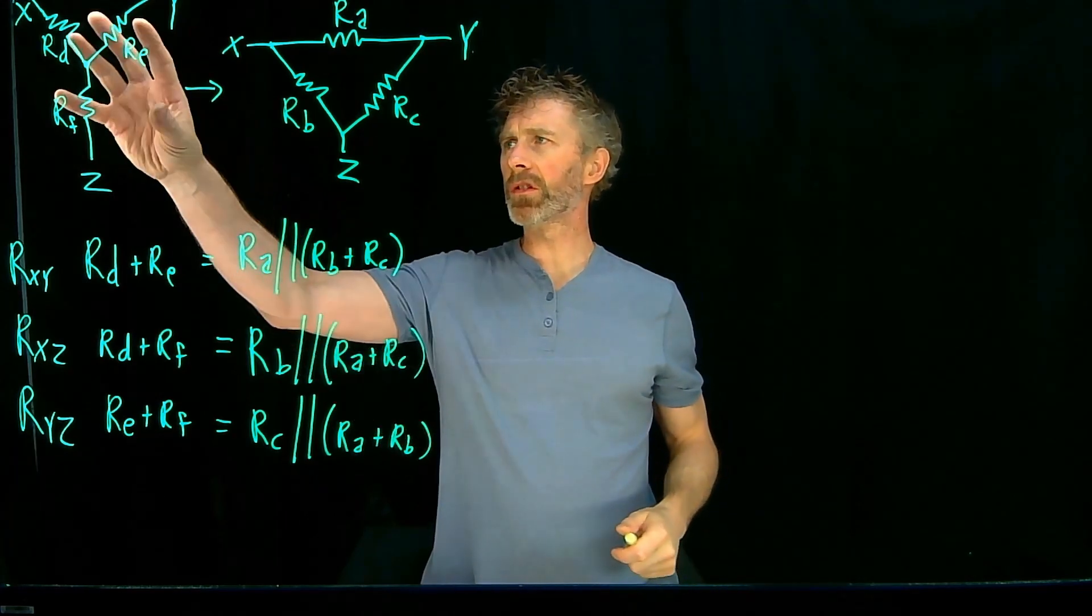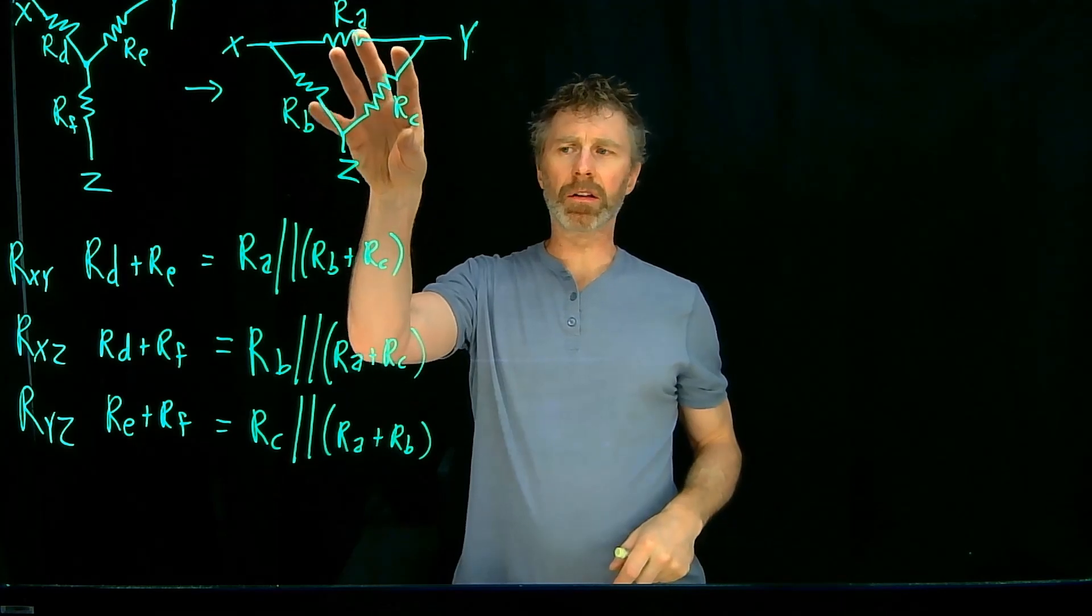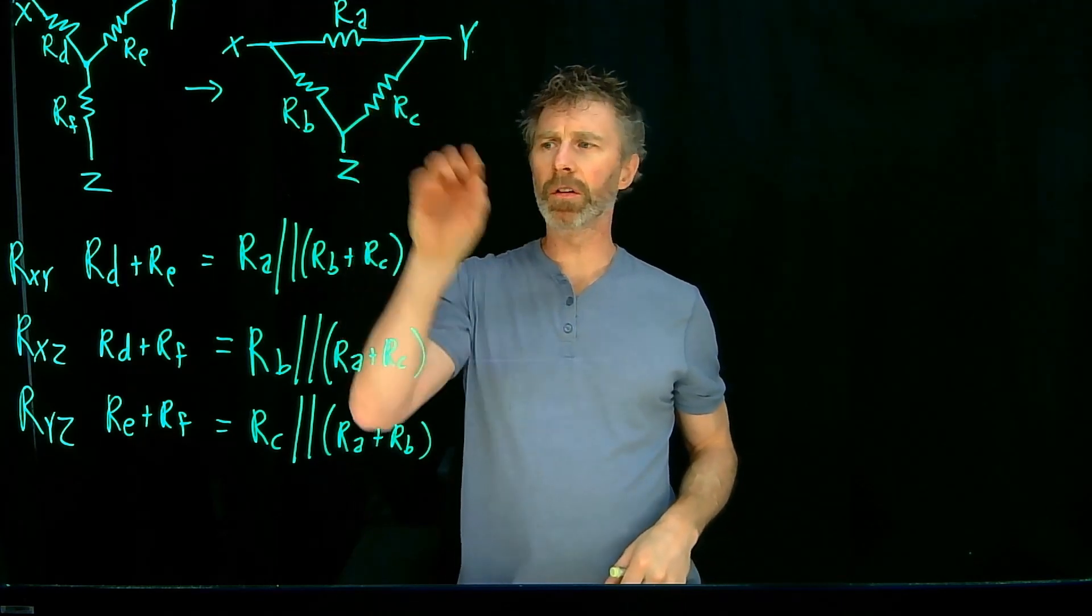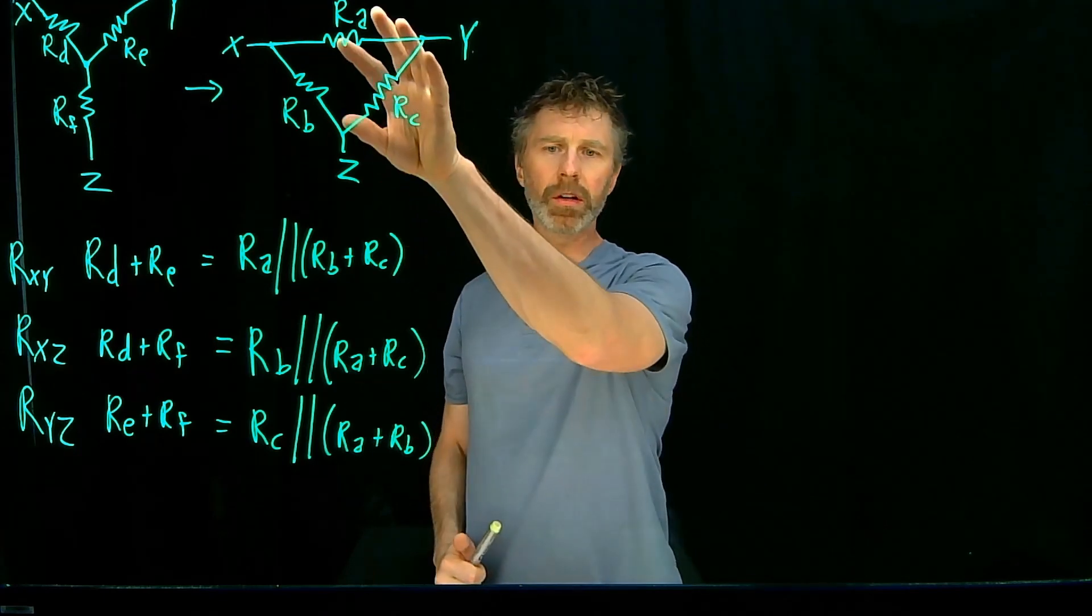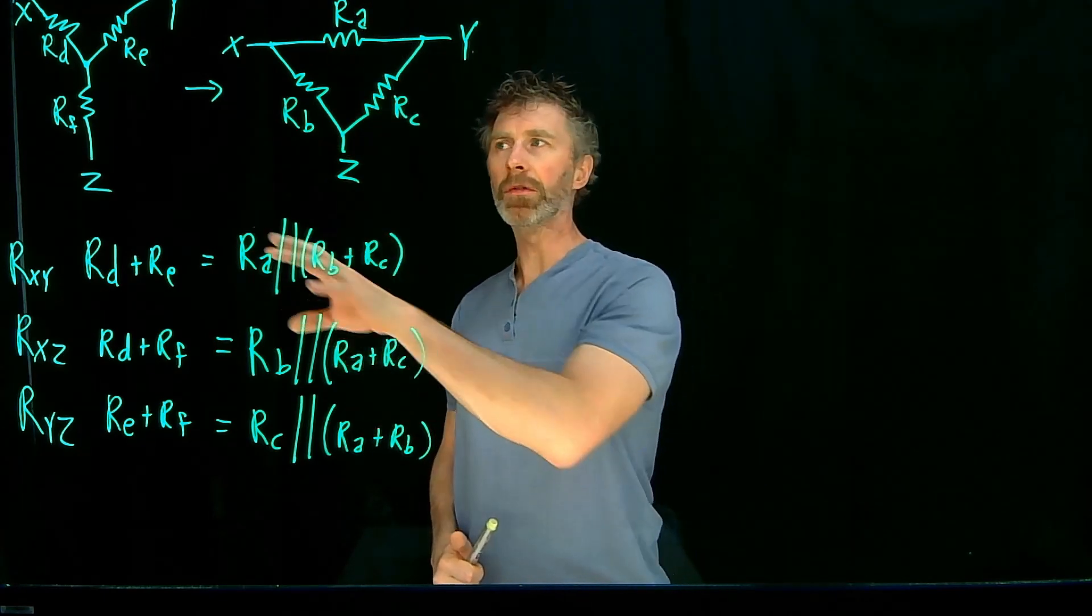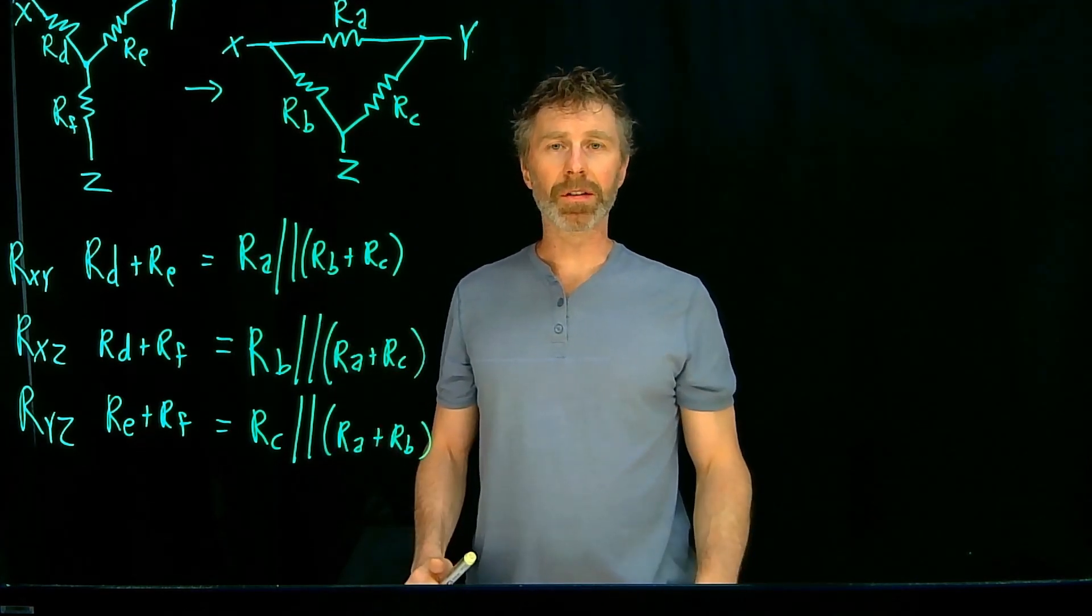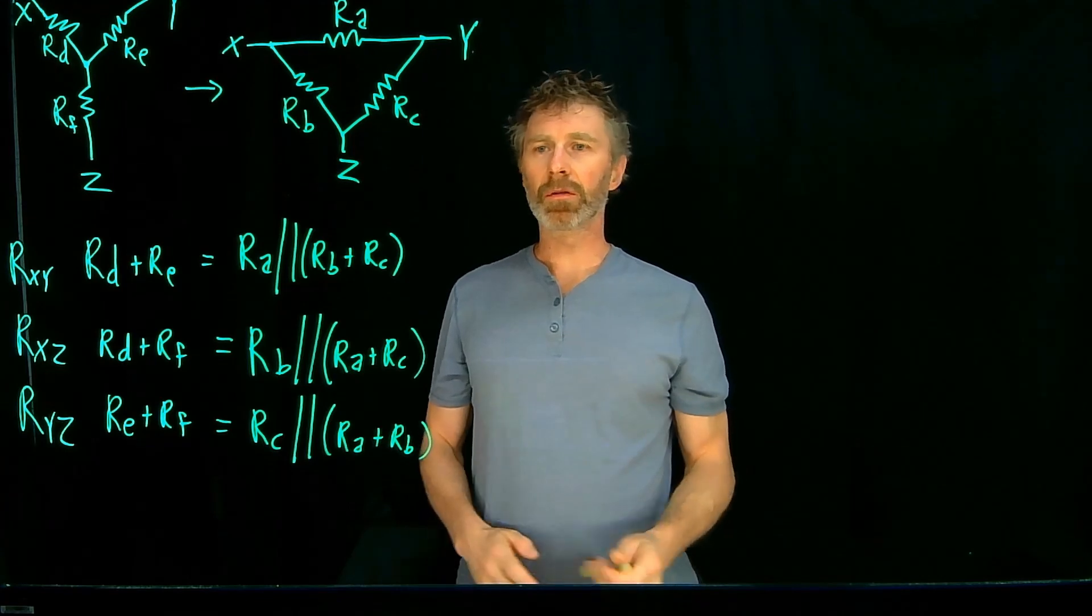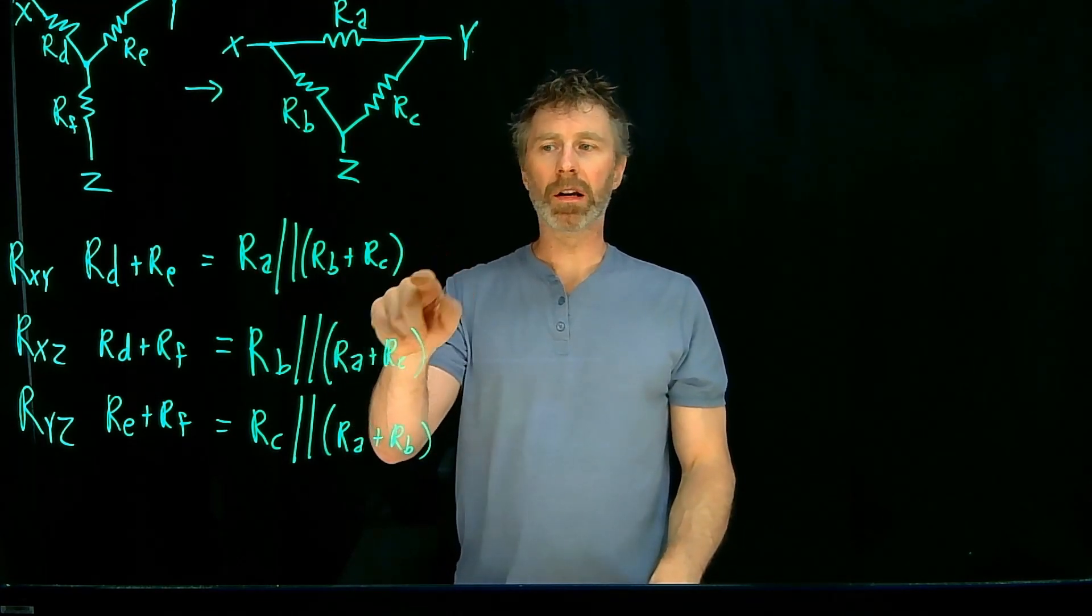And remember, we're starting with this circuit, so we know those three values, but we don't know these three values. So there's three values here that we need to figure out. And look at that, we've got three equations. Three unknowns here, three equations relating those unknowns to the values that we do know. And so what this means is if we solve the system of equations, we can figure out, we can come up with an equation for RA, an equation for RB, and an equation for RC.